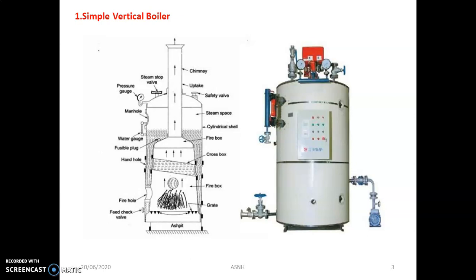In the simple vertical boiler, there are many parts visible in the image. The first important part is the shell, which is a metallic component manufactured by a fabrication process using proper welding. The material of the shell must be corrosion resistant. The second important part is the grate, situated below the combustion chamber — it is the platform upon which fuel is burnt.